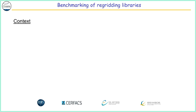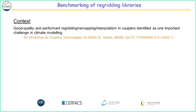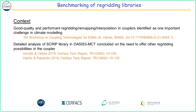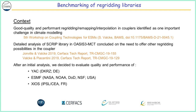Regarding the benchmarking of the re-gridding libraries: at the last workshop, one conclusion — quite evident for everyone — is that having a good quality and performant re-gridding library is very important. We performed a deep analysis of the SCRIP library, which we have in OASIS 3 MCT, and concluded that for some grids and in some cases it was not good enough, especially near the pole, and that we have to offer other possibilities in the coupler. That's how we started benchmarking different re-gridding libraries.